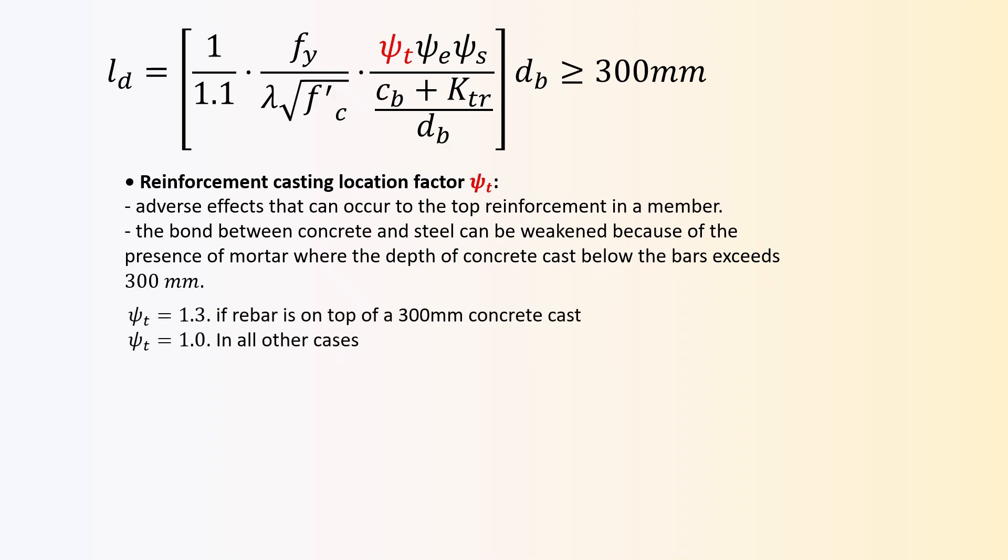It has been shown that the bond between concrete and steel can be weakened because of the presence of mortar, where the depth of concrete cast below the bars exceeds 300 millimeters. If the rebar is placed on top of 300 millimeters of fresh concrete, the factor is 1.3, while for other conditions, the value is 1.